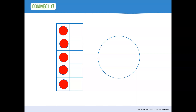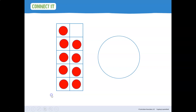So now we're going to place nine counters on our 10-frame. Let's keep going — we have five. We're going to add another one: six, another one, seven, eight, and nine. So now we have nine counters on our 10-frame.